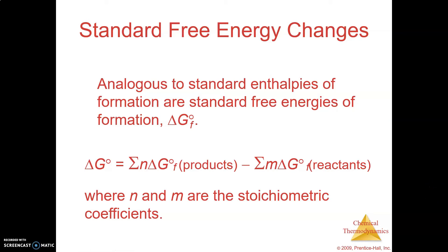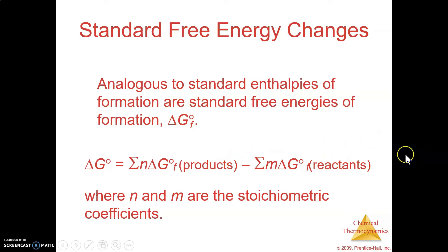This is where we left off, talking about free energy, delta G. Remembering that this formula is similar to delta H and delta S, where we're going to do products minus reactants. You've got to be given those standard energies of formation values in a table or within the problem, and then you would just plug them in — products minus reactants, just like we did for delta H and delta S.